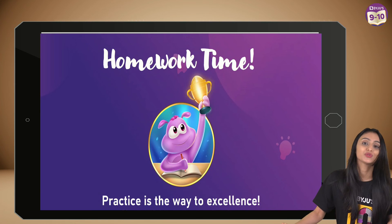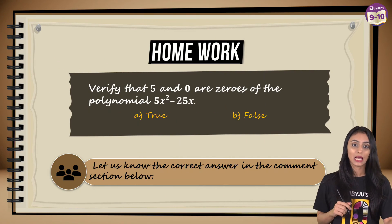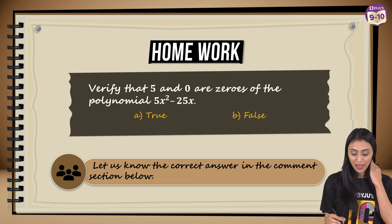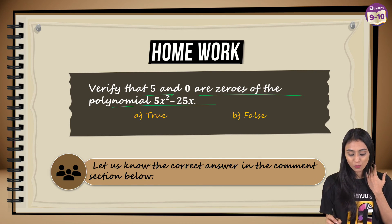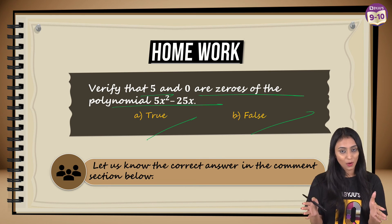If you have any confusions please leave your comments in the comment section below and try out this question once you see the video so that you can check your understanding as well. Verify that 5 and 0 are zeros of the polynomial 5x² - 25x. Is it true or false? Check this out and let us know your answers in the comments section below.